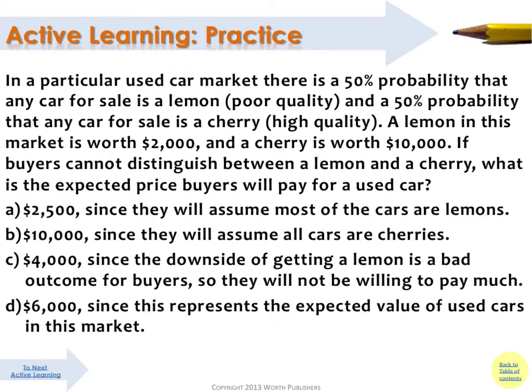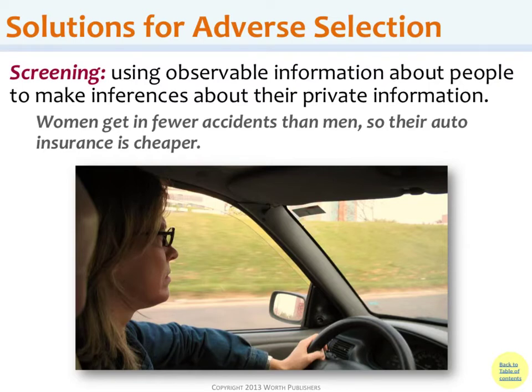As an application combining probability and adverse selection, you can work through a related question — the answer is $6,000 once you work the probability. So how do we solve some of these problems with lack of information? Improving information would be a gain for at least one party. Screening and signaling are two of the solutions.